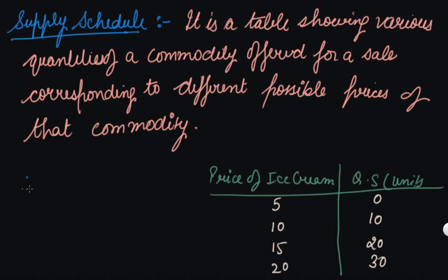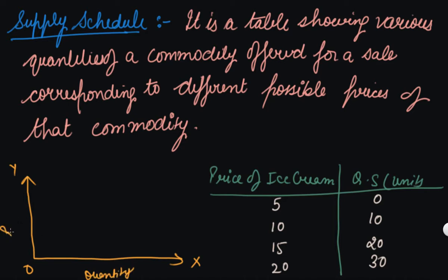Let's plot this on a graph now. On the x-axis you take quantity, and on the y-axis you take price. Let us take intervals of 5 on the price axis: 5, 10, 15, 20. And on the quantity axis, intervals of 5 again: 5, 10, 15, 20, 25, and 30.